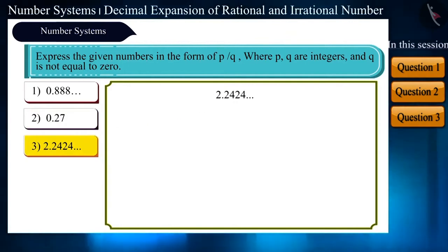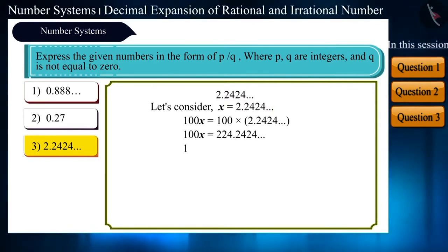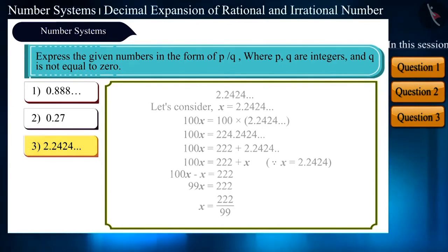Friends, let's take the third number, 2.2424. Let's consider it as x. In this number, two numbers that is 2 and 4 are getting repeated after the decimal. So, here we will multiply by 100 and solve it in this way. We get x is equal to 222 by 99.